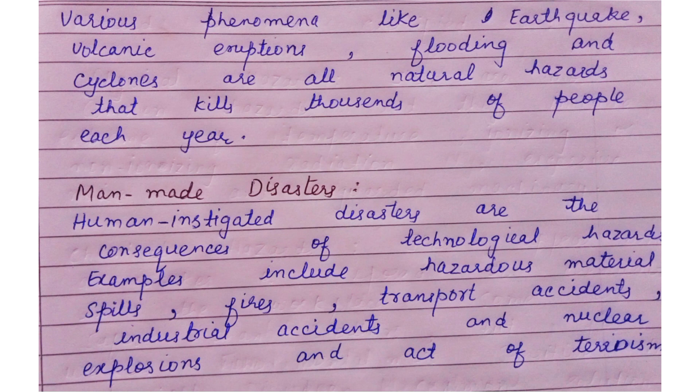Various phenomena like earthquakes, volcanic eruptions, flooding, and cyclones are all natural hazards that kill thousands of people every year. Second, man-made or human-instigated disasters are consequences of technological hazards — including hazardous material spills, fires, transport accidents, industrial accidents, nuclear explosions, and acts of terrorism.